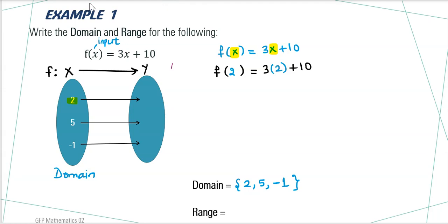This is the value of the function at x equal to 2. If we simplify and calculate it, 3 times 2 gives you 6 plus 10 which is 16. We can write it here. 2 is mapping to the element 16.